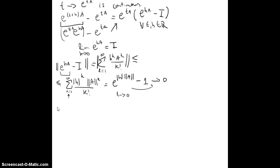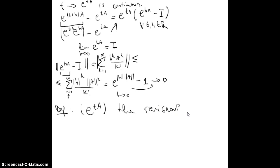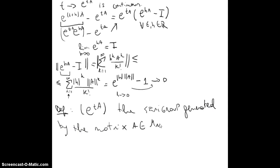So we will define e^(tA) as the one-parameter semigroup generated by the matrix A in Mn of complex numbers. This is the semigroup of matrices in complex numbers.